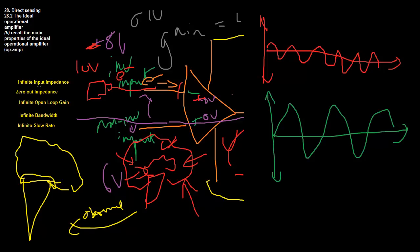Zero output impedance means the output line basically has no resistance. If you get 6 volts outputting, 6 volts will output — that's it. It's an assumption we should be quite familiar with because we make it quite often.